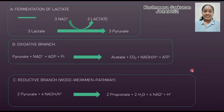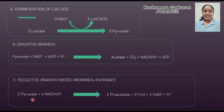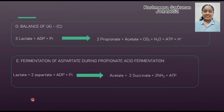To summarize the overall fermentation process: in the fermentation of lactate, there is an oxidative branch and a reductive branch, which is the Wood-Werkman pathway. Three lactate molecules are oxidized to pyruvate. One pyruvate is oxidized to acetate via the oxidative branch, while the other two undergo the reductive pathway to form two propionate molecules. Balancing this, three lactate molecules yield two propionate molecules plus acetate, carbon dioxide, water, ATP, and hydrogen ions.